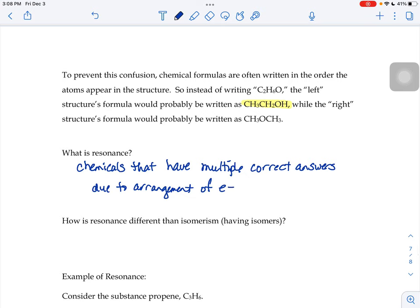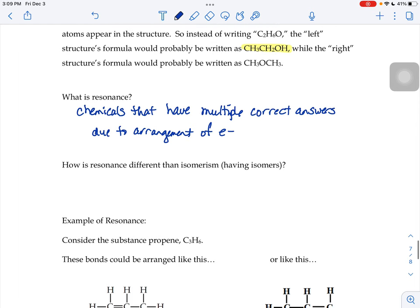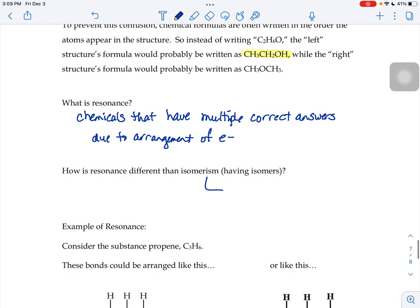So how is resonance different than isomerism, the ability to have different isomers? Well, when you have isomerism, isomers, the atoms move.